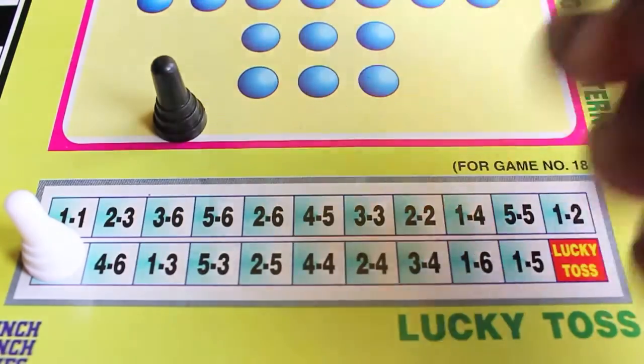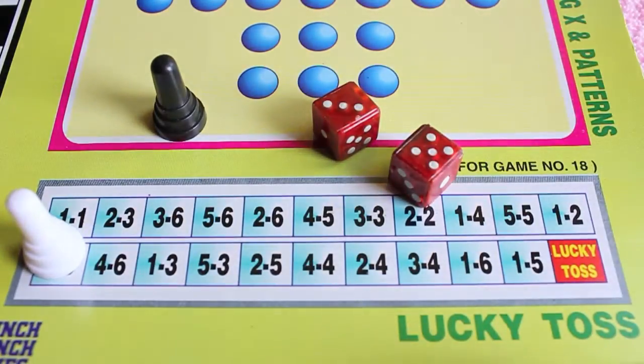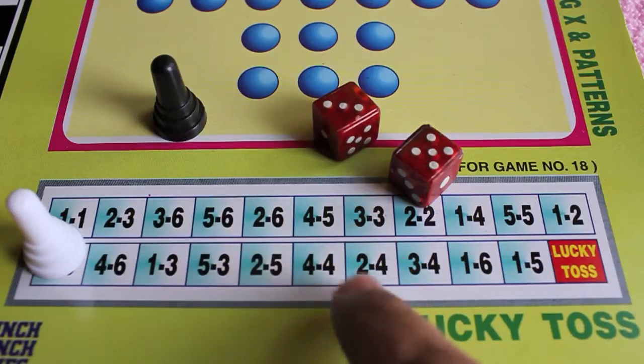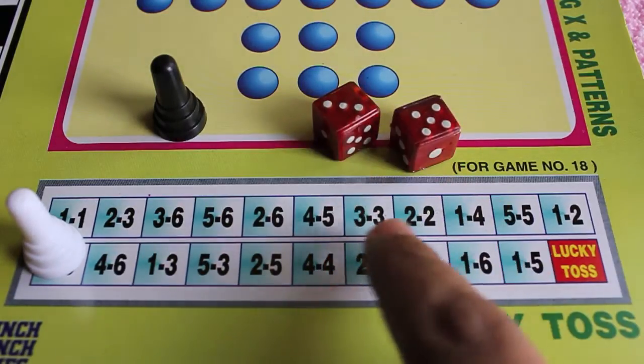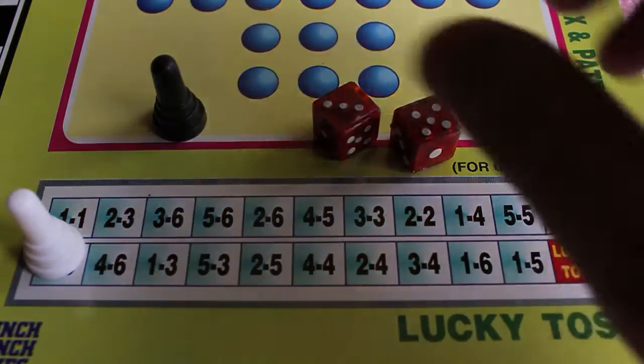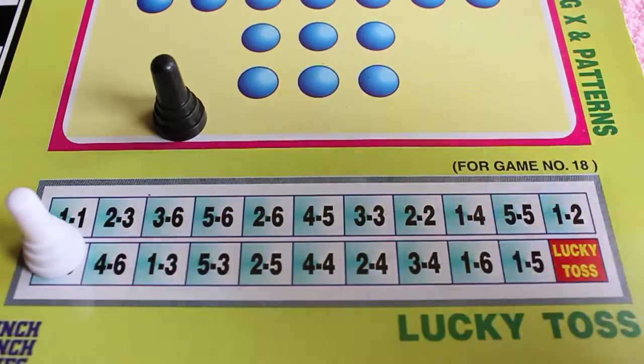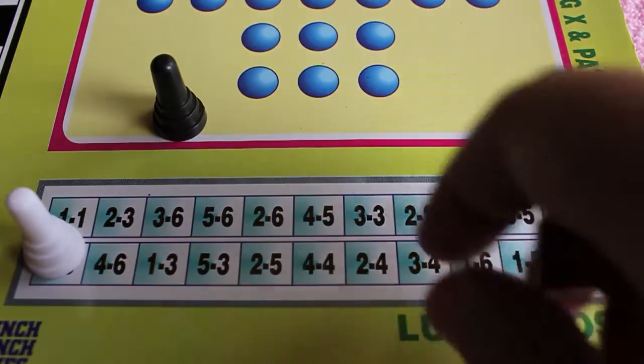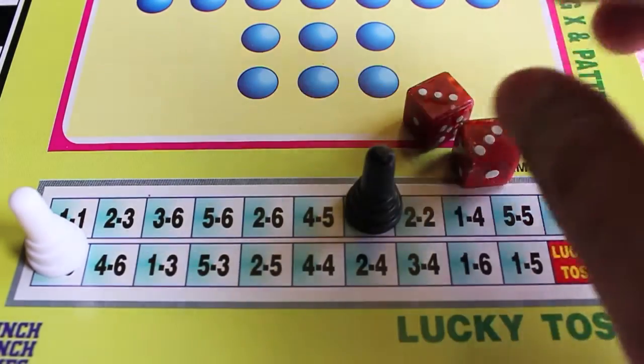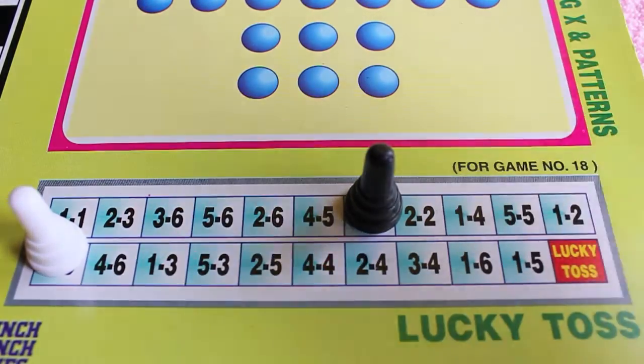Now you see it's 3-5, so again not on the board, so he skips and you continue like that. Now that's a 3-3, so you can cover that place.